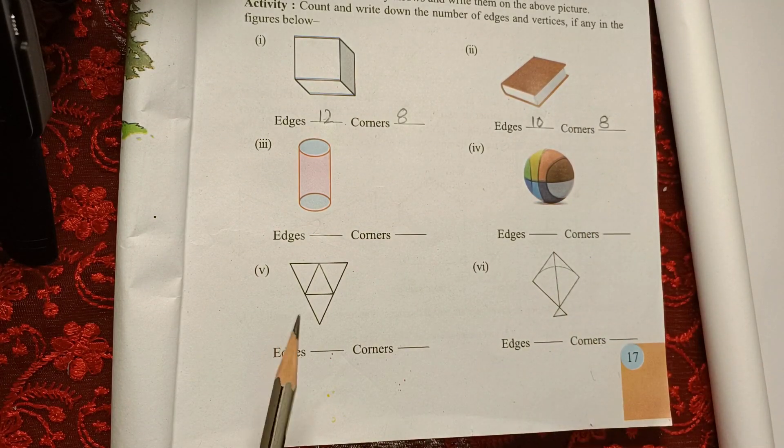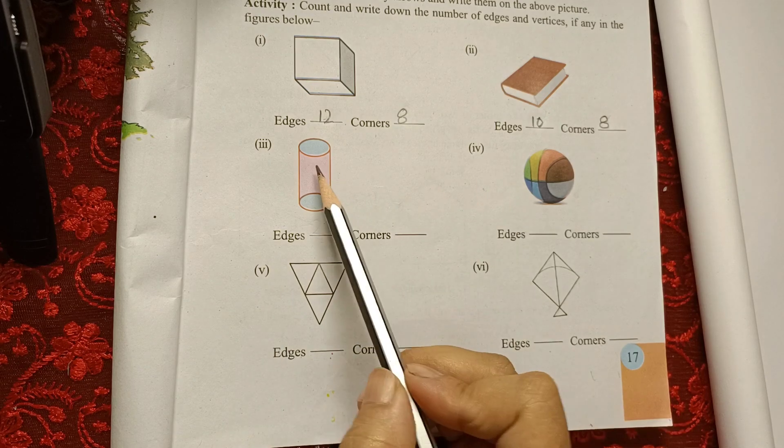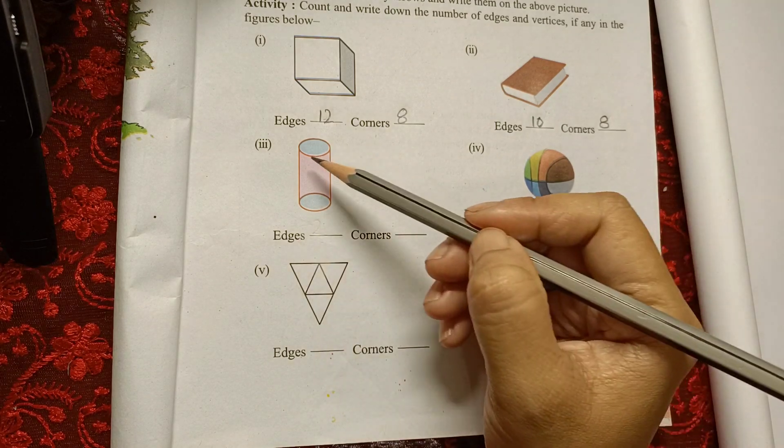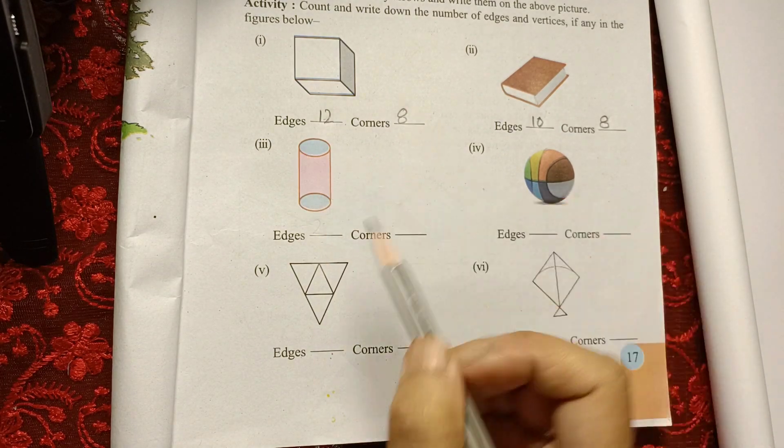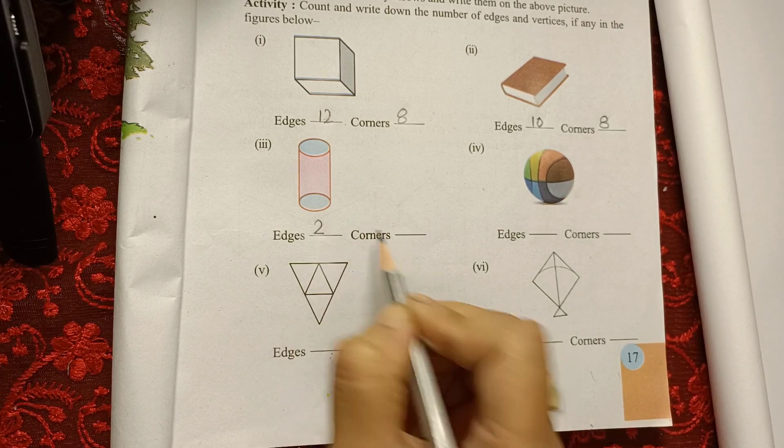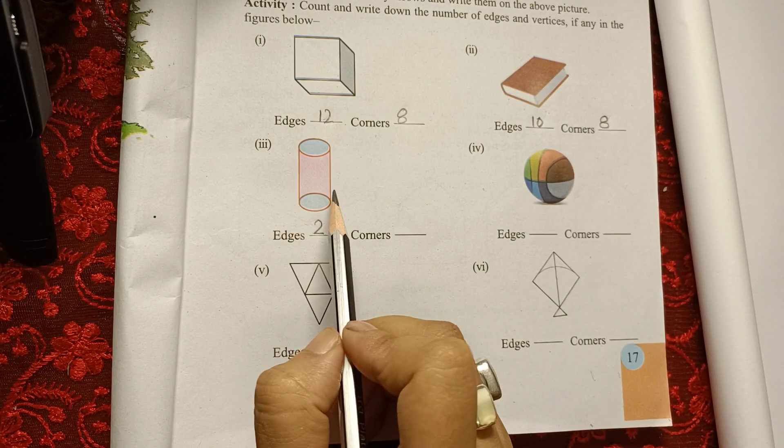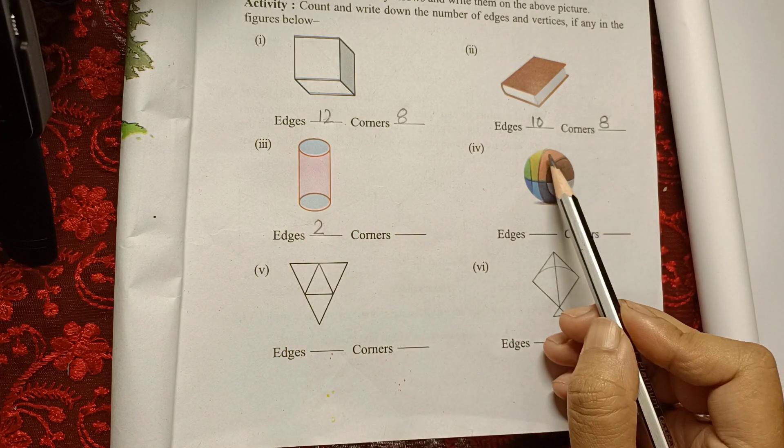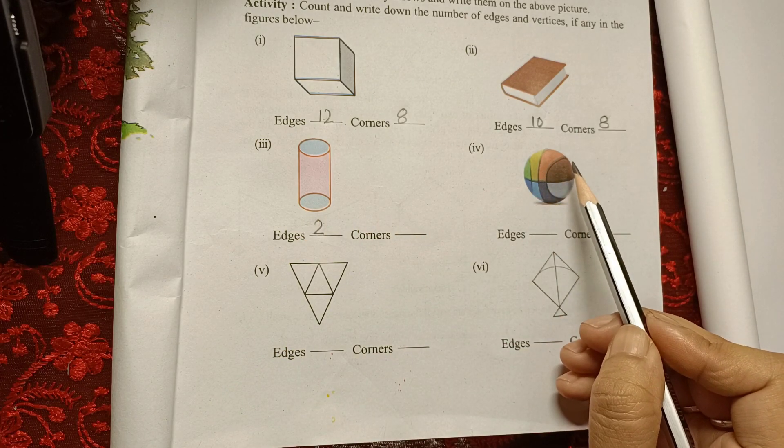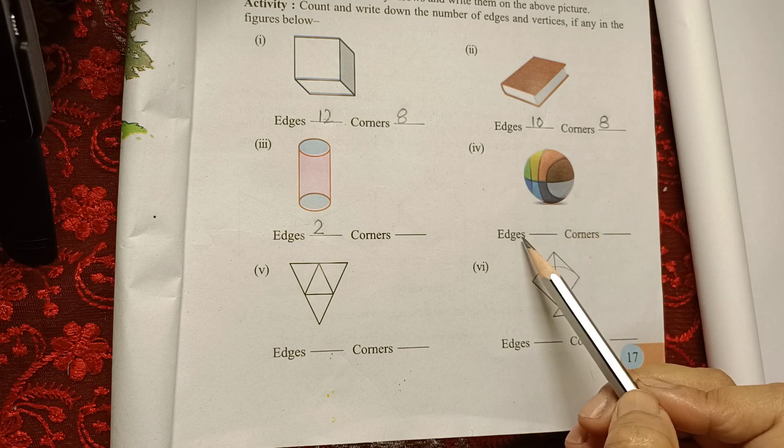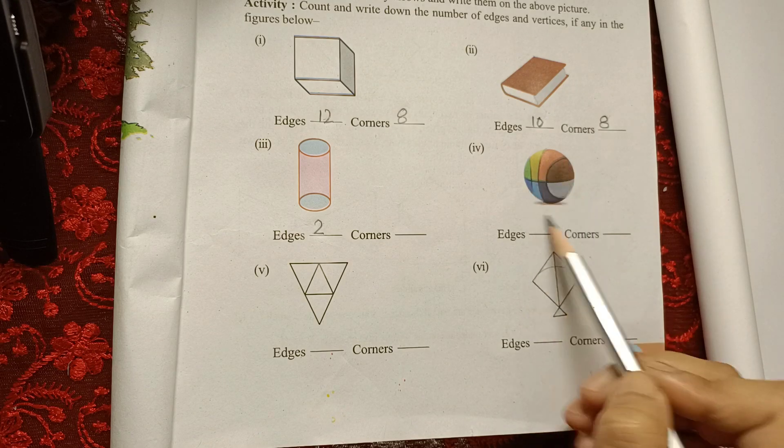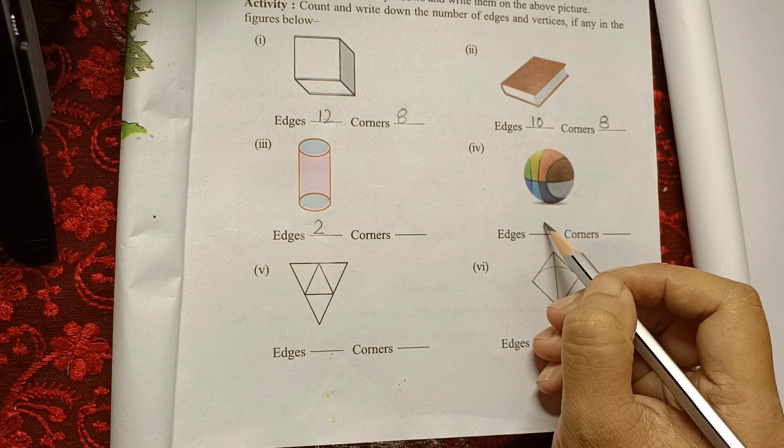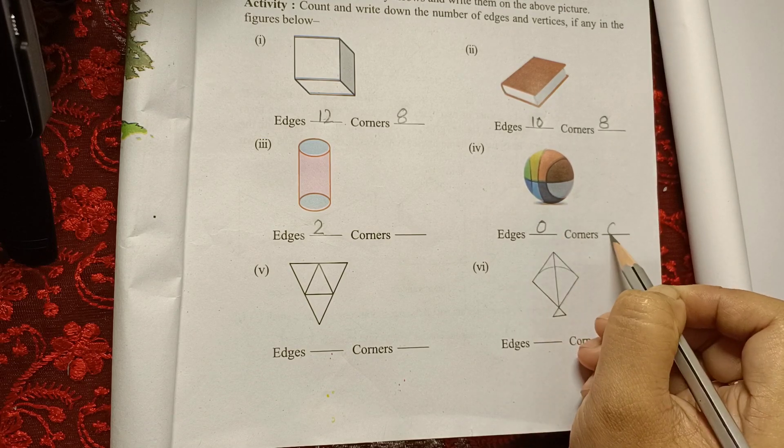Now this is like a cylinder, so we have how many edges? 1 and 2, so 2 edges. And corners, we do not have any corners because it is a different shape. Now this is like a circle or sphere, so no edges and no corners, 0 edges and 0 corners.